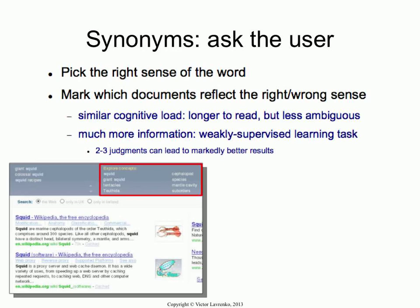This is an example of Yahoo from about three or four years ago. When you type 'Squid' into Yahoo, it figures out that you are looking for a slightly ambiguous term, and at that point it actually offered you to disambiguate the query. So it asked you: there are many concepts related to your query, so which one do you mean? It's suggesting different queries that you could try.